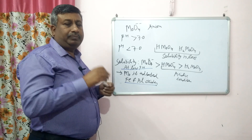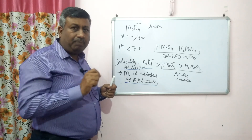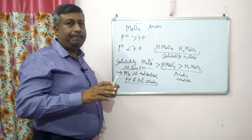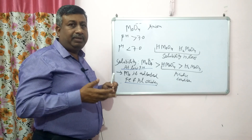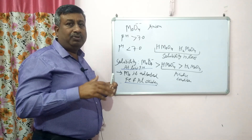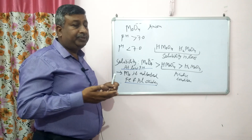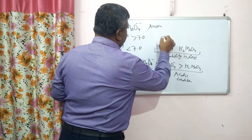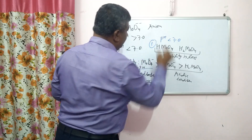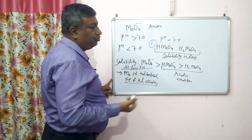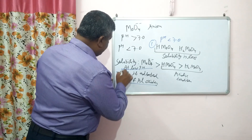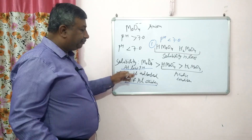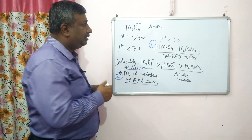For any nutrient to be available, it must be in a soluble form and present in soil solution. If it is tightly adsorbed, precipitated, or in a less soluble form, it is not available. Under acidic conditions, molybdenum faces two problems: formation of less soluble HMoO₄⁻ and H₂MoO₄, and adsorption on aluminium and iron oxides.